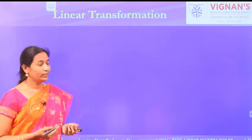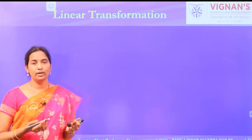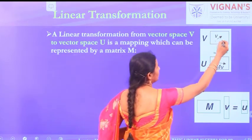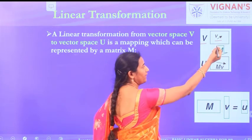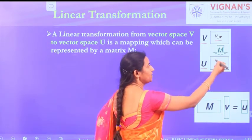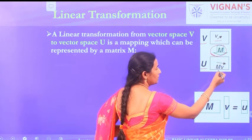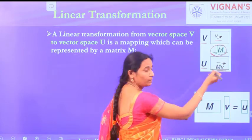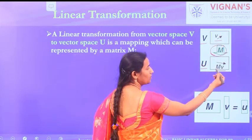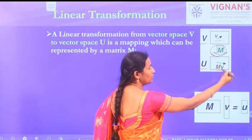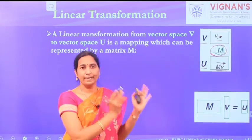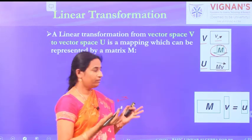Let's start with a discussion on linear transformation. Before understanding the speciality of eigenvectors, we should understand what linear transformation is. Consider vector V in space V — it is transformed to another space, the U space, with the help of a matrix. This transformed vector is represented in the projected U space, and the direction and magnitude of the vector both change.